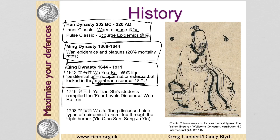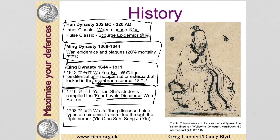A bit later, Ye Tian Shi developed the four levels and his students wrote it down. Shortly after, Wu Zhutong discussed epidemic diseases in terms of the three burners and came up with formulas like Yin Qiao San and Sang Ju Yin.